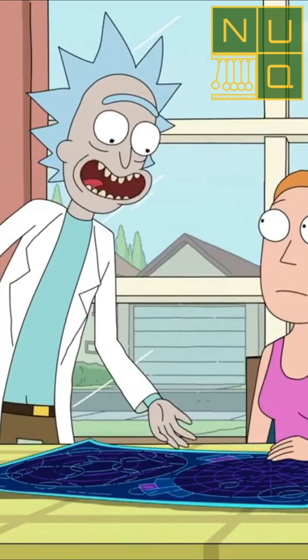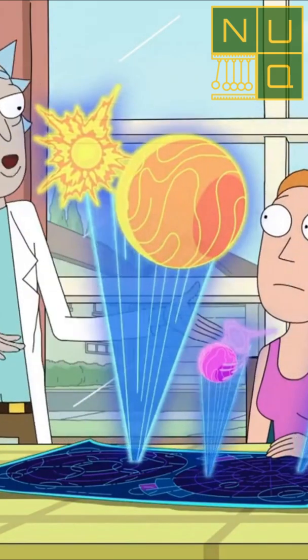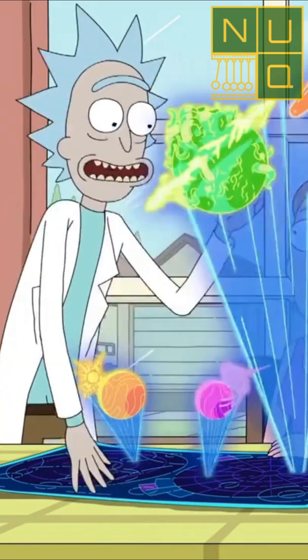In Season 5 Episode 3 of Rick and Morty, we see Rick and Summer visit multiple apocalypses, one of which involves a star going supernova.